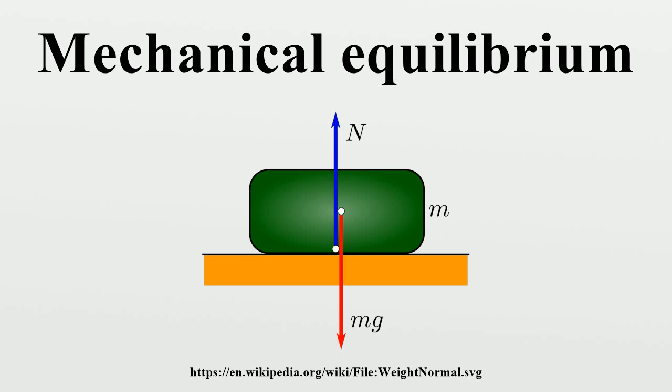Second derivative less than zero: The potential energy is at a local maximum, which means that the system is in an unstable equilibrium state. If the system is displaced an arbitrarily small distance from the equilibrium state, the forces of the system cause it to move even farther away.